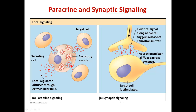Synaptic signaling is closely related to paracrine because the signal is also diffusible. However, in this case the signal is a neurotransmitter that diffuses across a very short synapse between two cells and then stimulates the target cell. This could be a neurotransmitter diffusing to another neuron, or it could be a neuromuscular junction in which a neuron is signaling to a muscle cell.